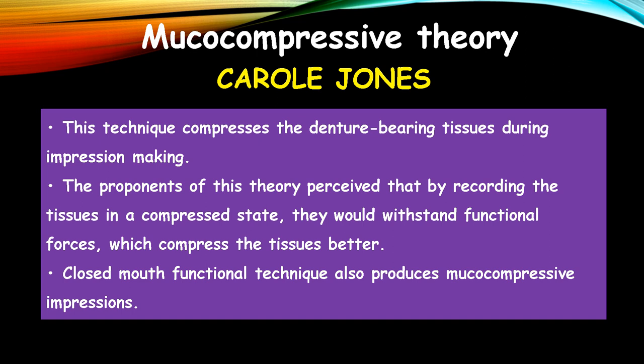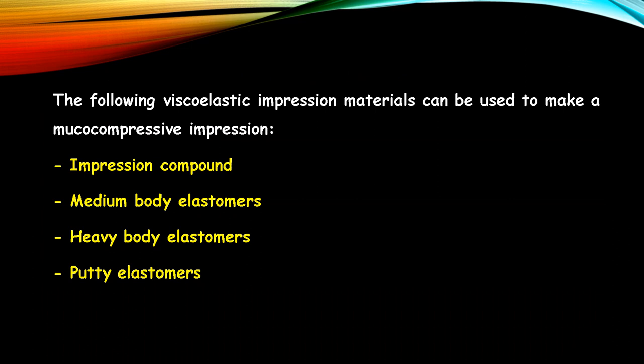Coming to the next theory, the mucocompressive theory. It was put forward by Carroll-Johns. According to this theory, the tissues are recorded under pressure — the technique compresses the denture-bearing tissues during impression making. By recording the tissues in a compressed state, they would better withstand functional forces that compress the tissues. The closed mouth functional technique also produces mucocompressive impressions. The viscoelastic impression materials used include impression compound, medium-body elastomers, heavy-body elastomers, and putty elastomers.